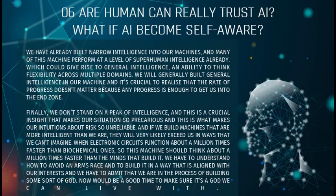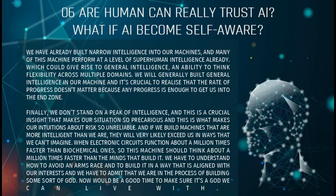We will eventually build general intelligence into our machines, and it is crucial to realize that the rate of progress does not matter, because any progress is enough to get us into that end zone. It is crucial insight that makes our situation so precarious and our intuitions about this so unreliable. If we build machines that are more intelligent than we are, they will very likely surpass us in ways we cannot imagine. Since electronic circuits function about a million times faster than biochemical ones, these machines could think about a million times faster than the minds that built them. We have to understand how to avoid an unbiased outcome and build AI in a way that is aligned with our interests — we are in the process of building some sort of god, and now would be a good time to make sure it is a god we can live with.